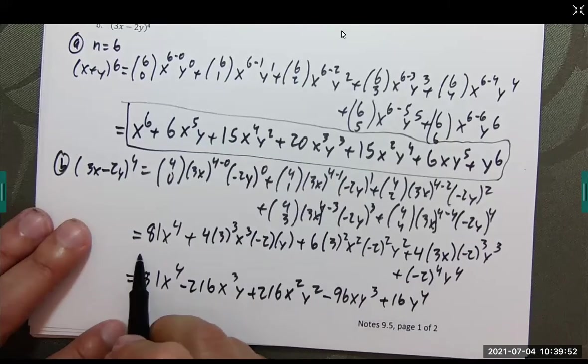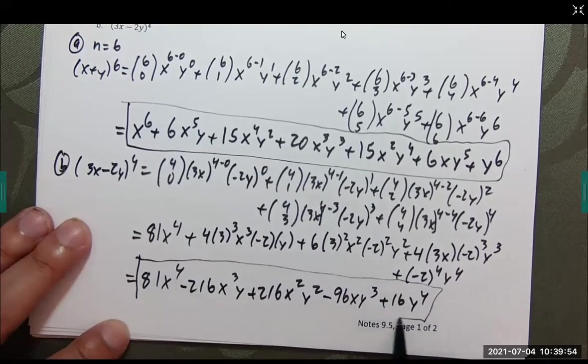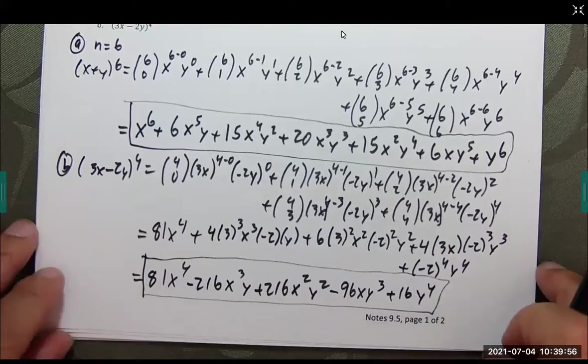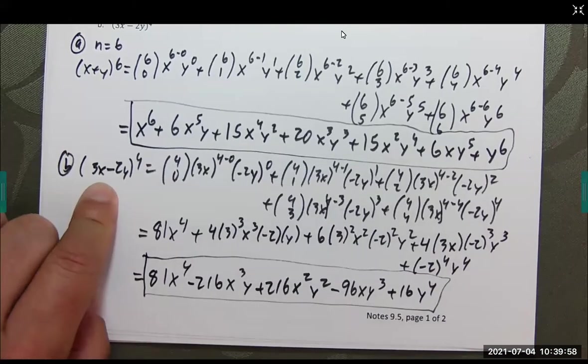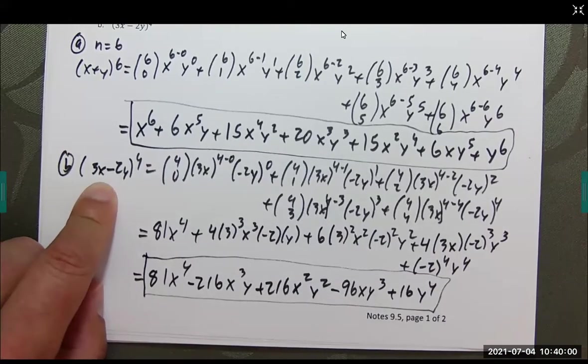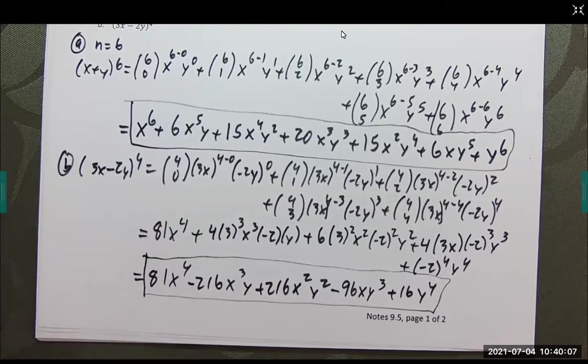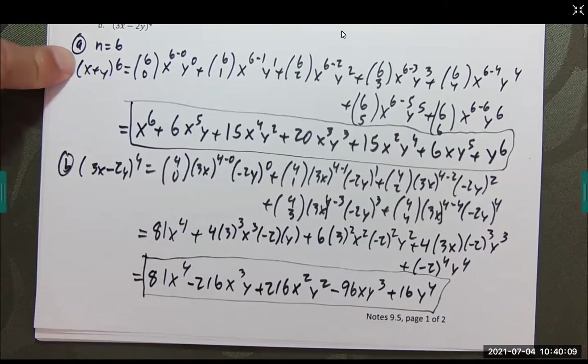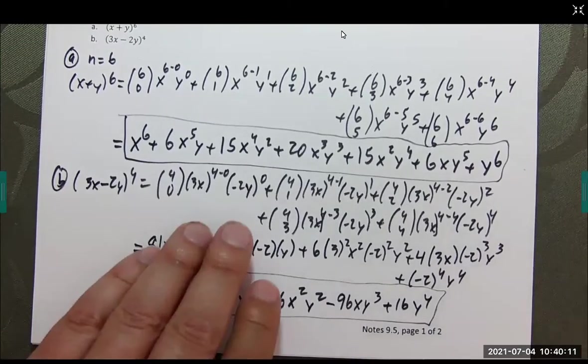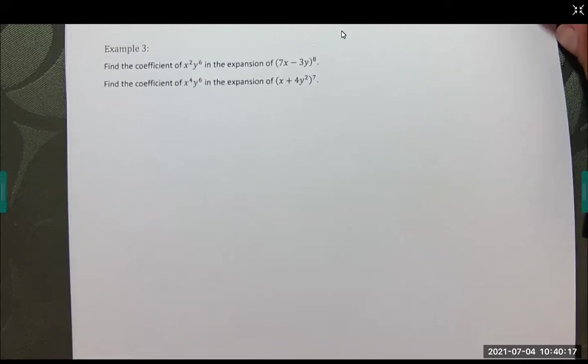Now, this may look like a lot of extra work. But, doing this by hand, meaning (3x minus 2y) times (3x minus 2y), foil that together. Multiply it by another 3x, foil that together. Then, do it again. Four times. Or, up here, even worse, six times. This formula is way faster. And, the nice thing about this formula is it's programmable. Meaning, we could actually write a computer program that could come up with all the coefficients for us. All right. So, here we go.